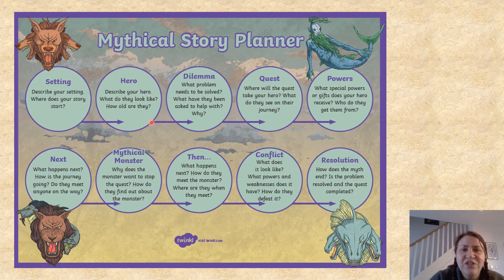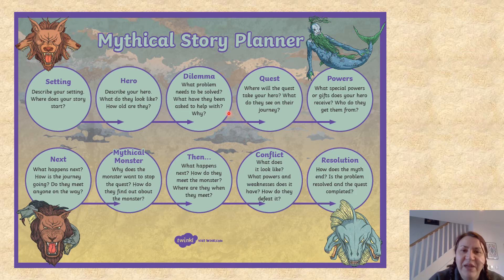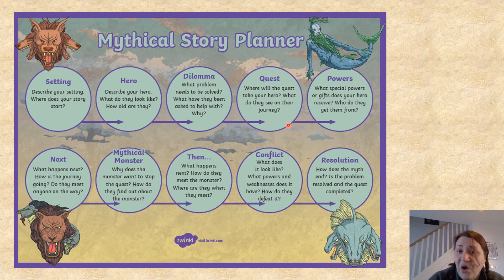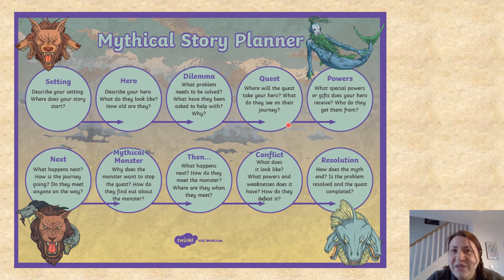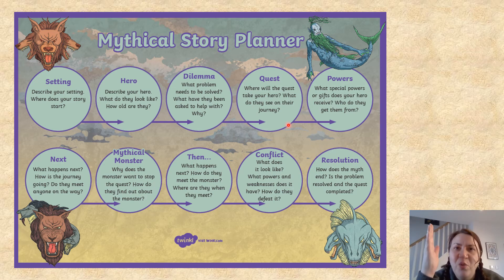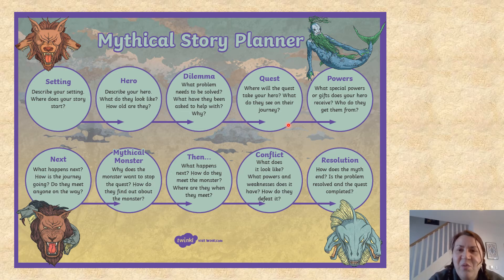In the flow chart you've got: describing your setting, describing your hero, then thinking about the dilemma — what is the problem that needs to be solved? What have they been asked to do? Is it from one of the gods? Why have they been asked to help? Then the quest — the journey. Where does your hero go? What do they see? The journey itself is probably not going to be plain sailing — is there going to be a storm at sea? Maybe Poseidon comes up to stop them getting through, or another creature bars their way.